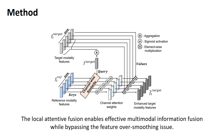We also propose a novel local attentive fusion to combine information from different sources. We found in experiments that existing attentive mechanisms such as self-attention and cross-attention allow global interaction in the temporal dimension, bringing about a feature smoothing issue. This is especially harmful for temporal action detection, where local feature discriminability is essential. Therefore, we propose a new fusion method that suppresses information exchange across different feature locations.